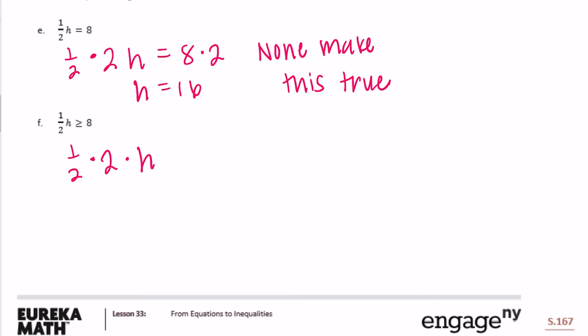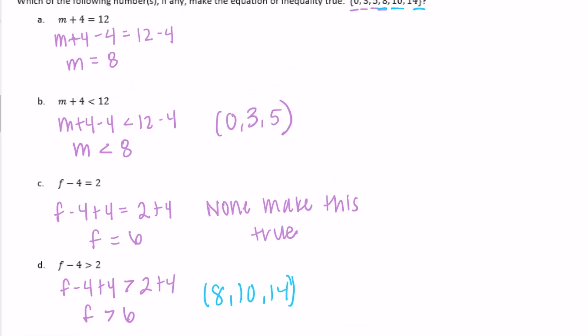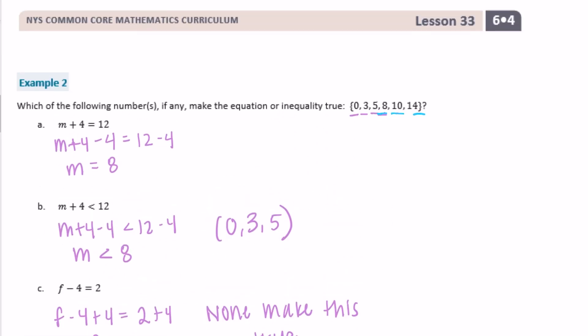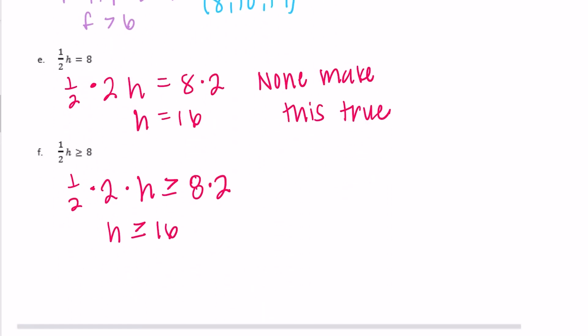Part f: one half h is greater than or equal to 8. Multiplying both sides by 2: h is greater than or equal to 16. Looking at our choices — do we have anything greater than or equal to 16? We don't, because the highest value is 14. So again, none make this true.